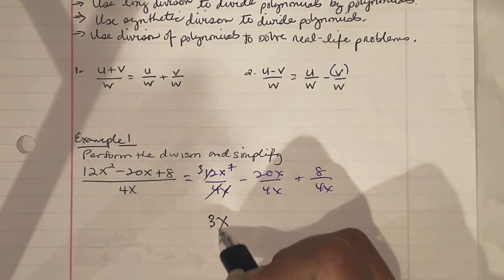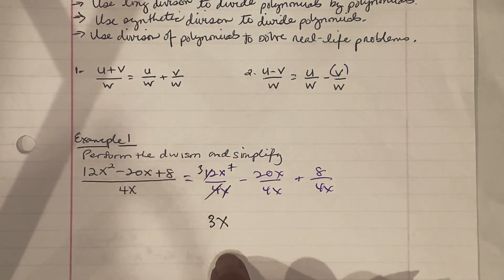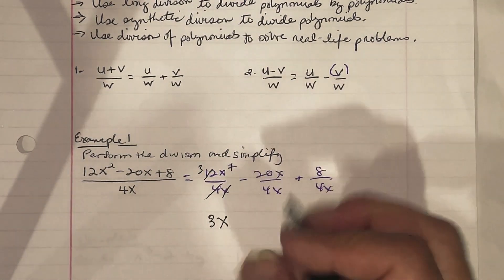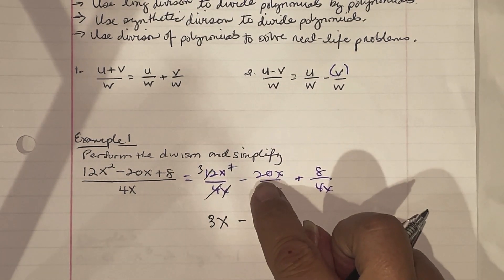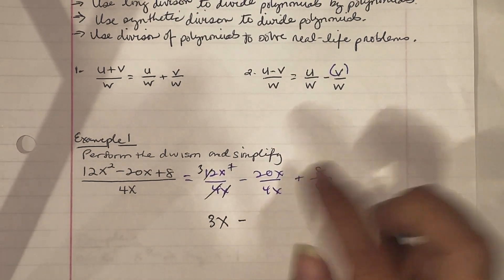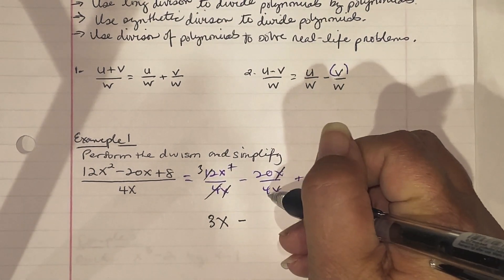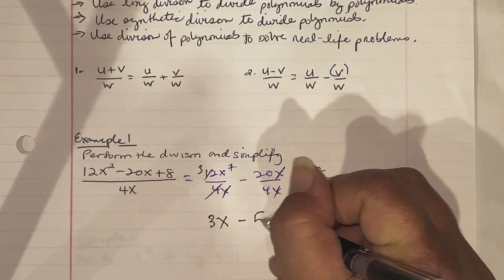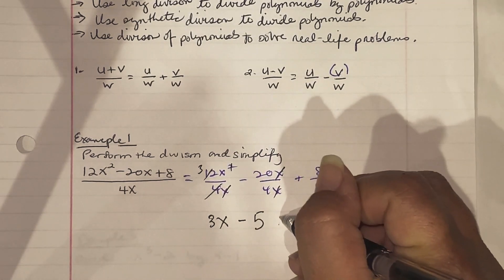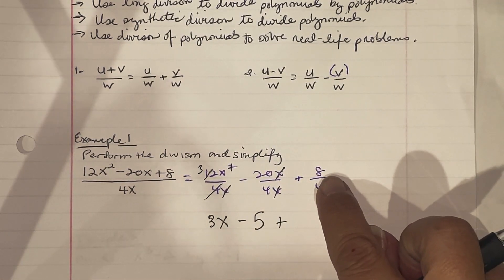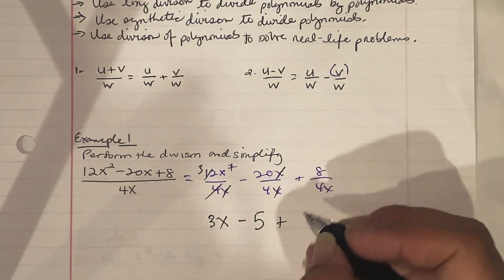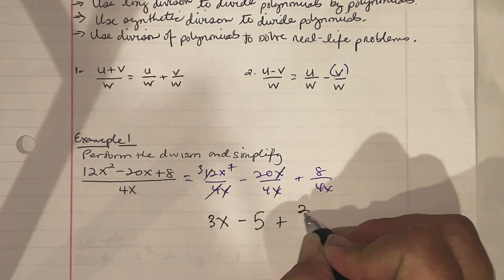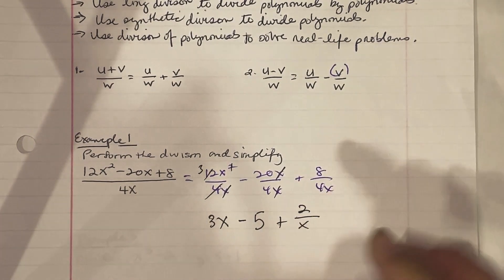There's a minus sign. The x's cancel out, and 20 divided by 4 is 5, so the second term is minus 5. Then 8 in the numerator over 4 in the denominator — 4 goes into 8 twice, and there's no x to reduce, so it stays as 2 over x. The simplified answer is 3x minus 5 plus 2 over x.